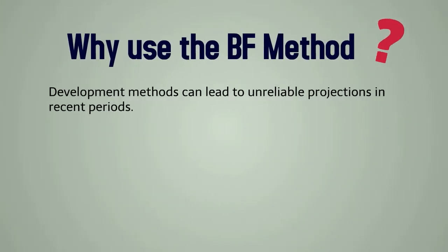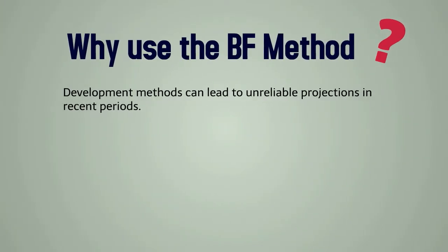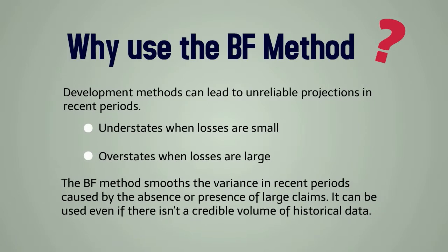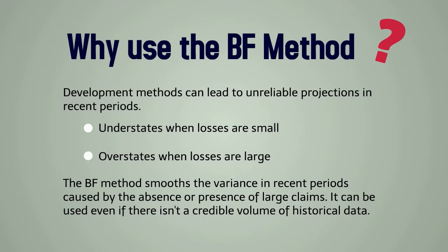Development methods can lead to unreliable projections in recent periods — sometimes understating when losses are small, other times overstating when losses are large. The Bornhuter-Ferguson Method smooths the variance in recent periods caused by the absence or presence of large claims, and it can be used even if there isn't a credible volume of historical data.